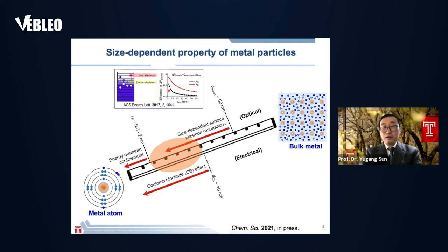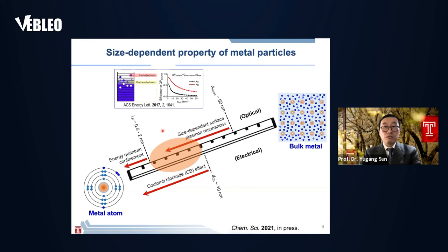The hot electron generation efficiency significantly increases as the particle size decreases, in particular when the particle size is smaller than 10 nanometers. This tells us that reducing the particle size can increase the efficiency of hot electron generation.